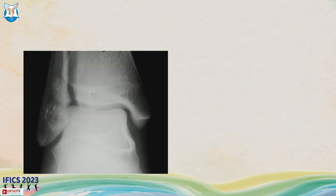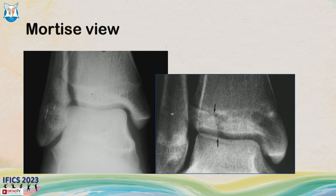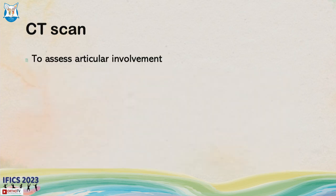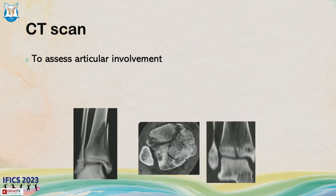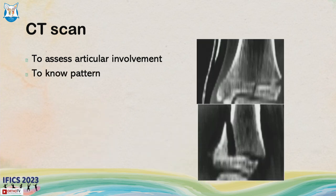It's important to take three views: AP, lateral, and mortise. The mortise view lets you see the distal tibial epiphysis exactly — a slightly rotated film may cause you to miss subtle injuries. CT scan is often used to assess articular involvement. An innocuous-looking X-ray can reveal a shattered epiphysis on CT. Always follow your clinical gut feeling when swelling and tenderness are out of proportion to the X-ray.